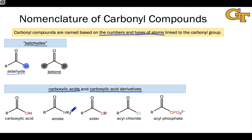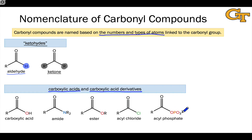For example, in the amide we see NR2. In the ester, we see an alkoxy group instead of the hydroxyl group. In the acyl chloride, we see chlorine linked to the carbonyl carbon. And in the acyl phosphate, we see a phosphate group linked through its oxygen to the carbonyl carbon.